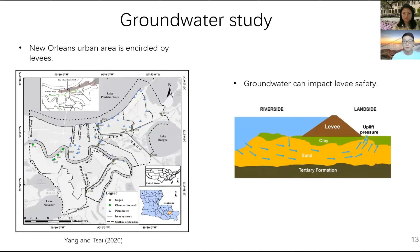Groundwater can be a potential factor that impacts levee safety. As shown in the red figure, the mechanism is that high river water at the riverside of the levee can sink into the ground and become groundwater. When the river stage is high, groundwater pressure also becomes very high. This high groundwater pressure can push the levee foundation materials, resulting in instability of the levees and making them easy to be breached.